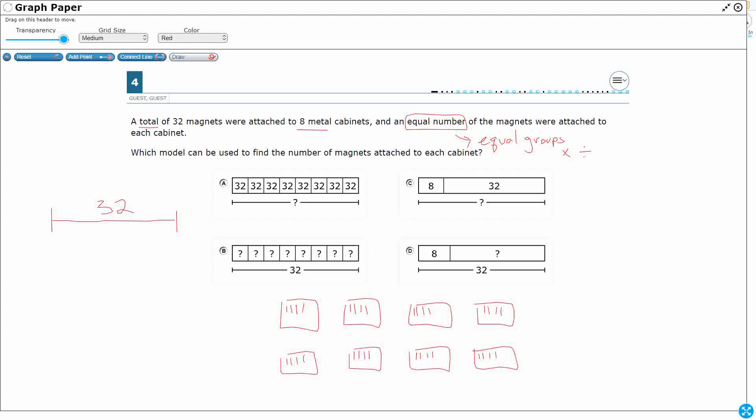Which model could be used to find the number of magnets attached to each cabinet. Well, I just figured it out. There's four on each. Now, if I recognize this as a division problem, I could have said, okay, so I took my 32 and I divided it, because I've got equal groups into eight cabinets equally. Well, 32 divided by eight, hopefully I know that as a fact. That's going to be four.